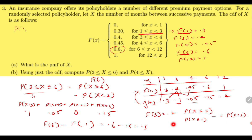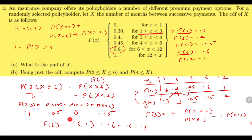Similarly, if you need P(X ≥ 4), it equals P(X=4) + P(X=6) + P(X=12), since 5 is not defined. This is the same as 1 − P(X < 4) = 1 − P(X ≤ 3), because at 3 it is defined. So 1 − F(3) = 1 − 0.4 = 0.6.